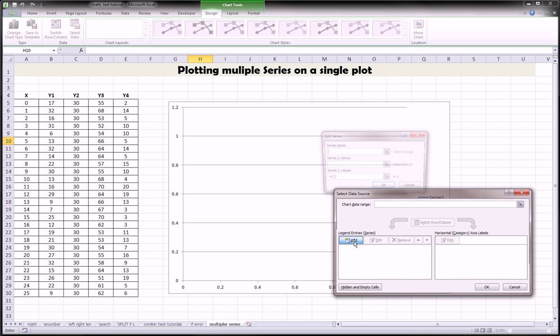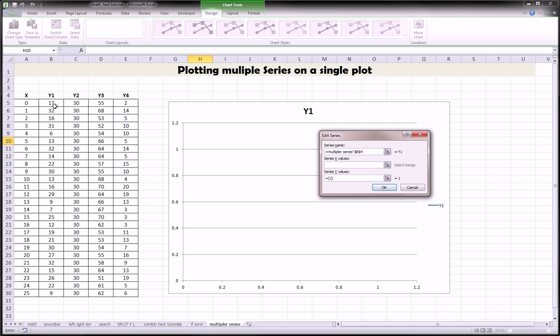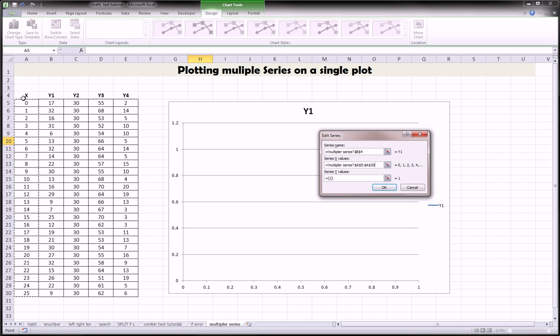First, we add a series. The name of the series, we click, we'll do Y1 first. X values will always be this X column, not including the header.